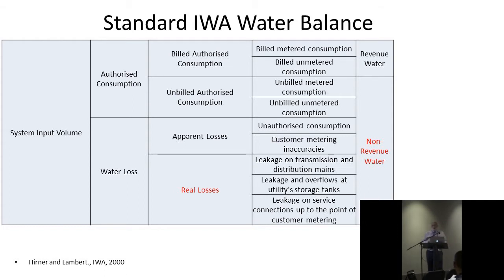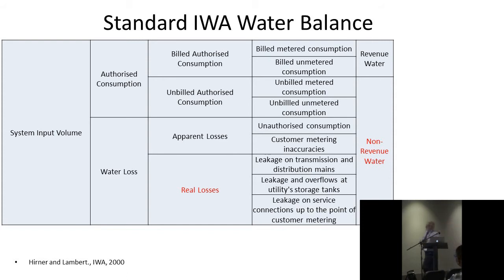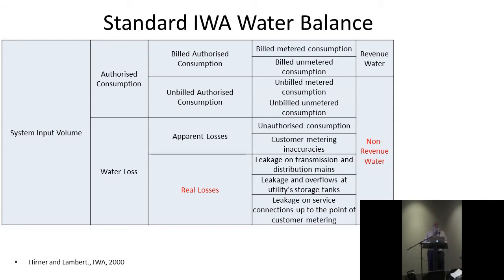Another infamous one was 'unaccounted for water' — we didn't have a standard definition for it, so we've banned its use in the Water Loss Task Force group. The standard water balance starts with system input volume: the water coming out of your treatment works, plus any water bought in from another utility. That's the water going into your network — system input volume.